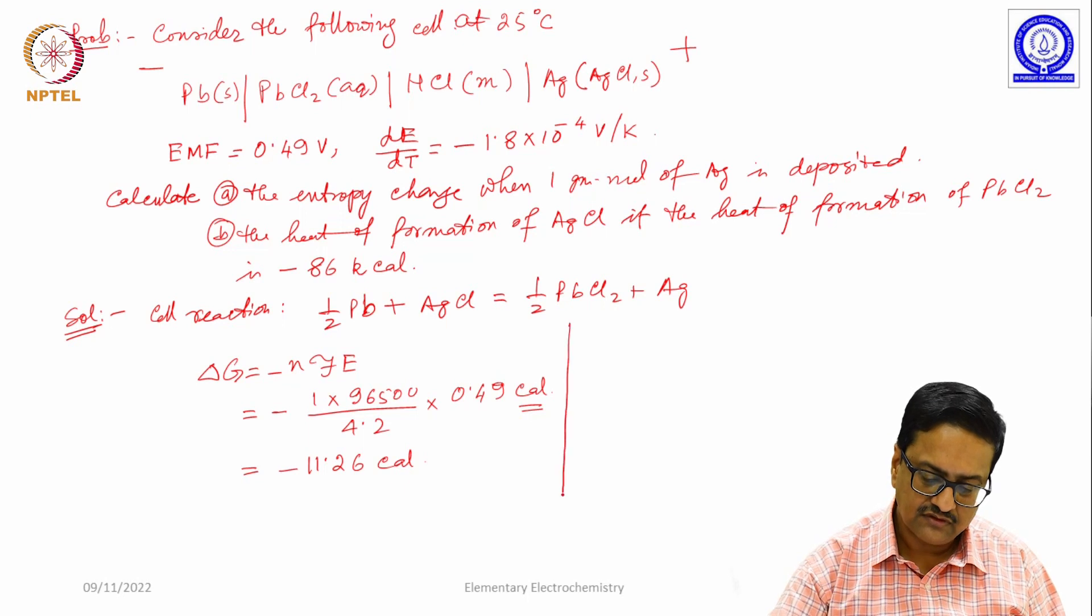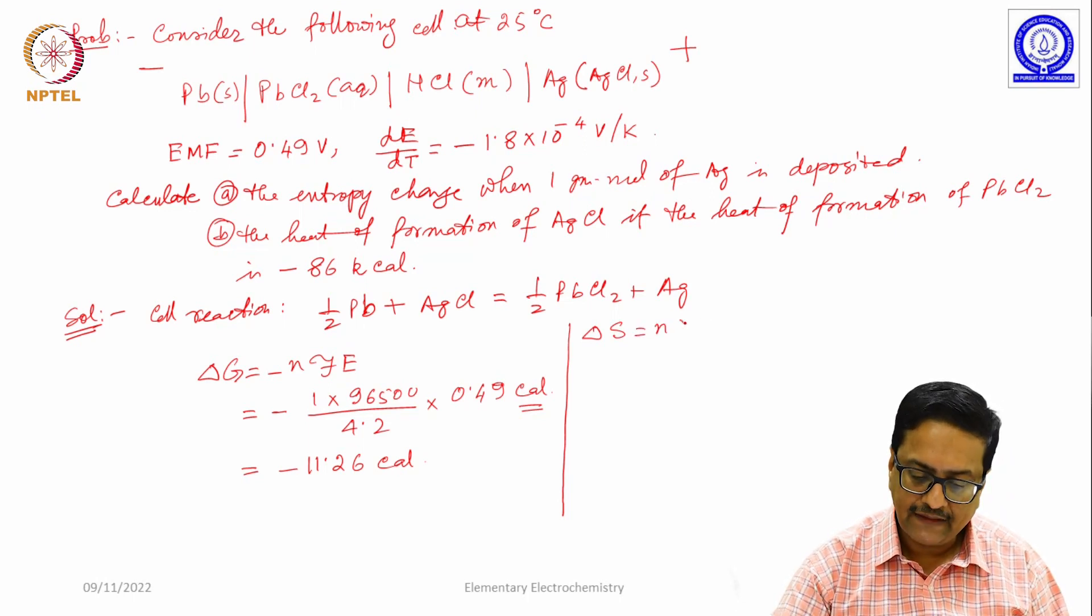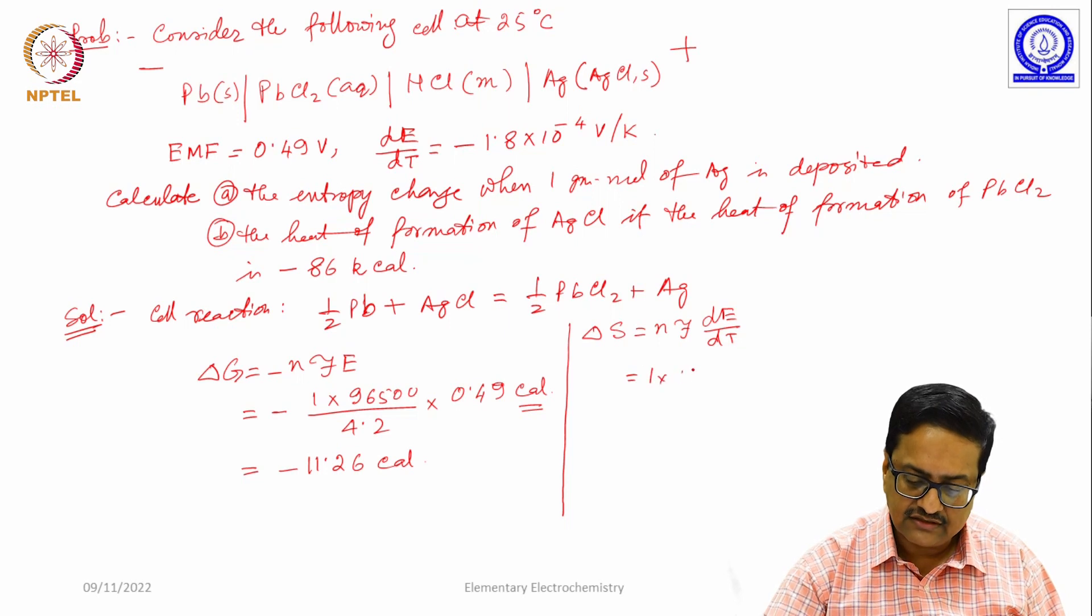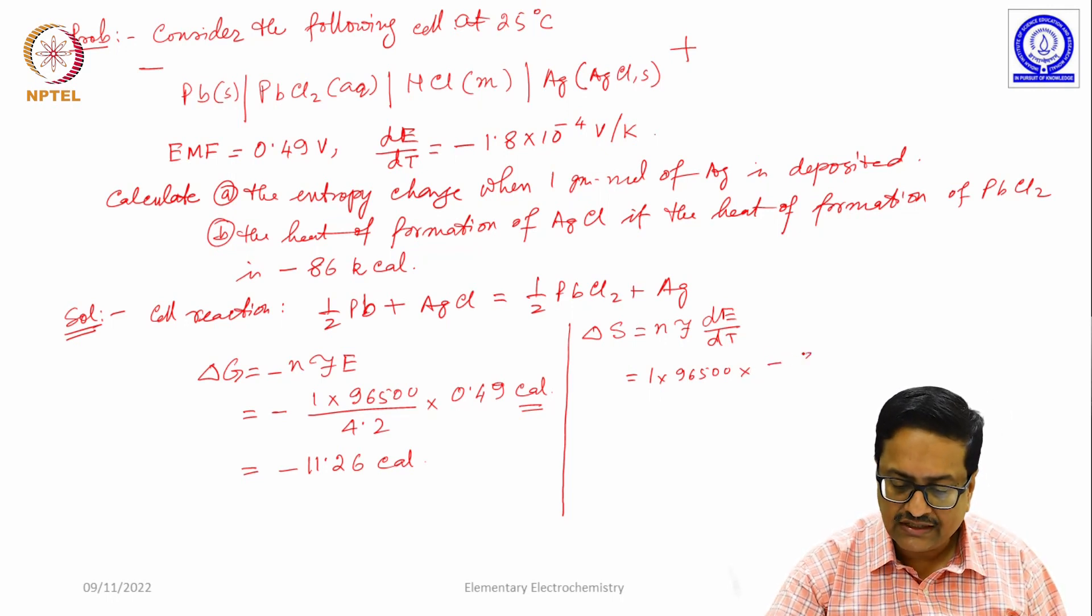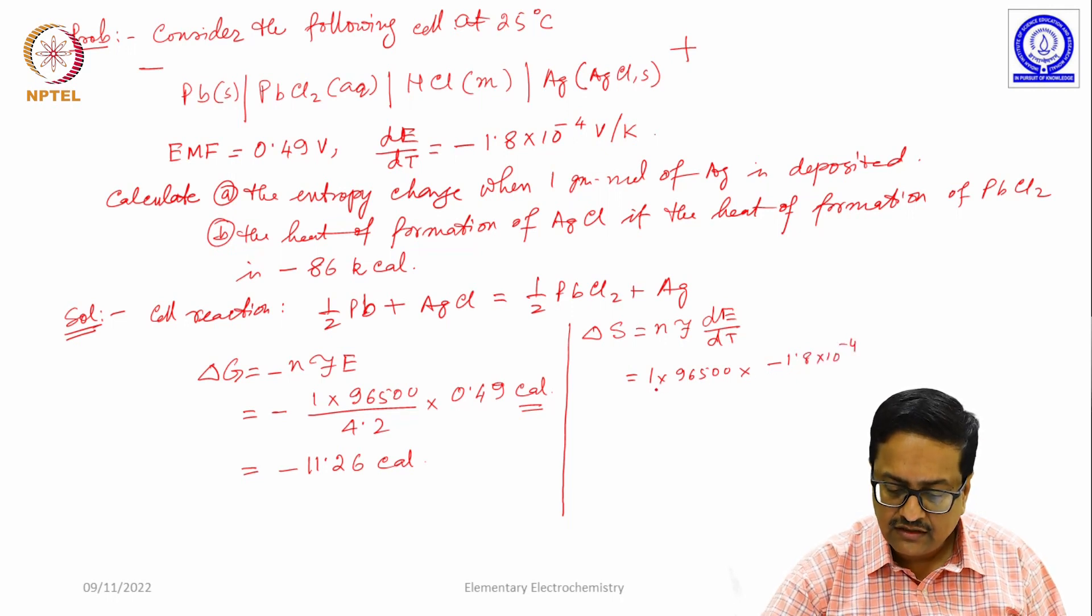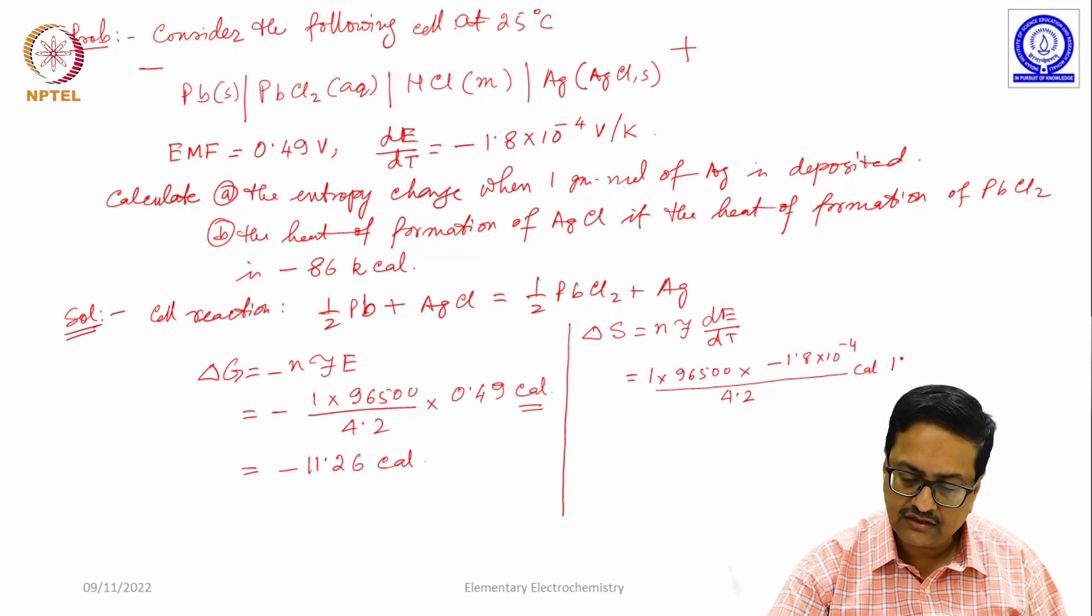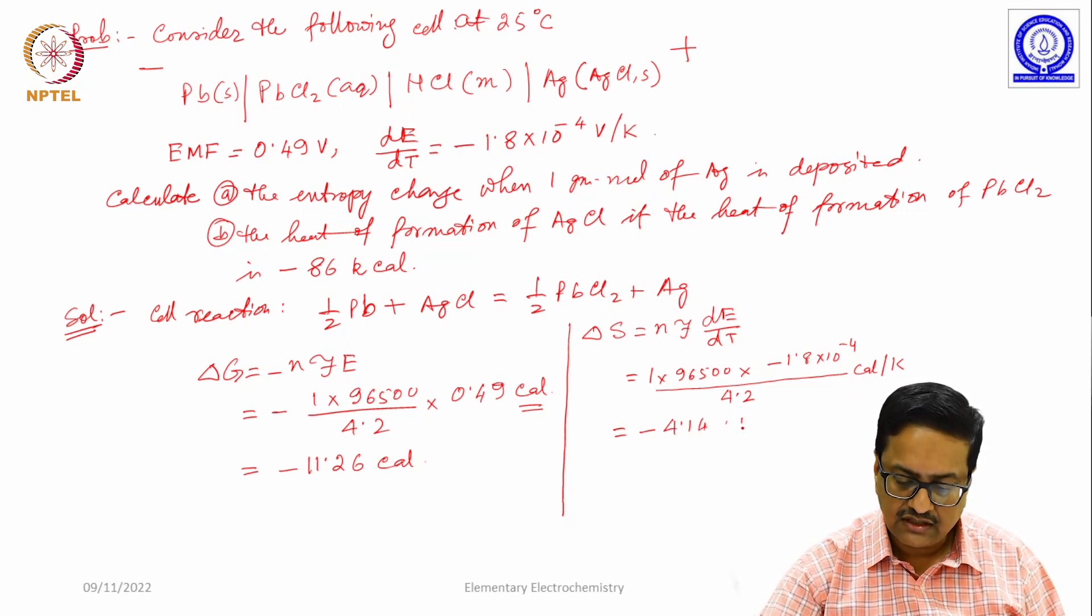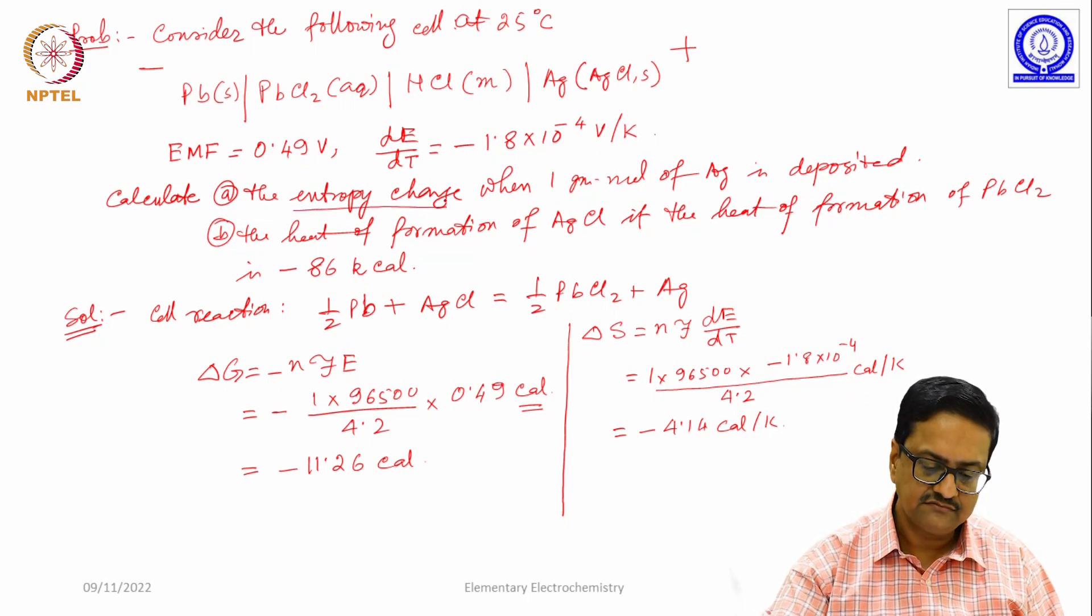And then when you try to calculate delta S, which is equal to N F dE dT, you can simply replace the values as 1 into 96500 coulomb into dE dT is given as minus 1.8 into 10 to the power minus 4 and again divided by 4.2 and the unit should be calorie per Kelvin. We have got the entropy change.